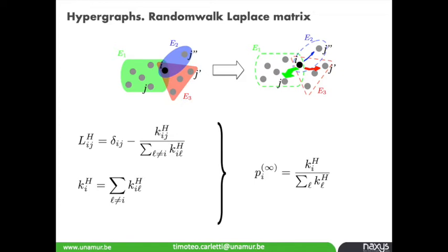In this way you can prove this is indeed a Laplacian matrix, and there exists a stationary distribution π_∞ which, if you replace hyperdegrees with degrees, recalls the standard distribution for random walks on networks.